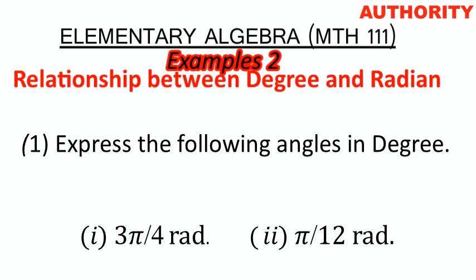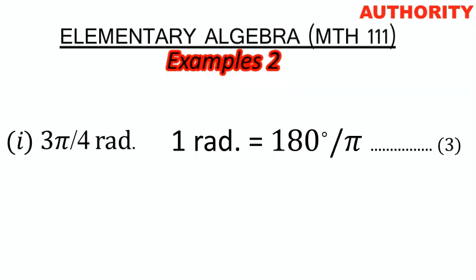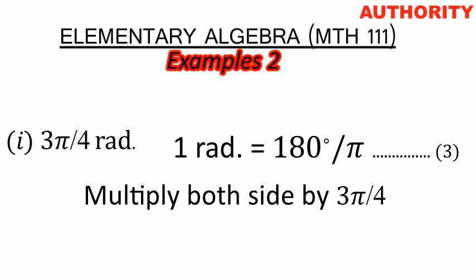The first thing we'll do is pick the right formula. The right formula to pick is the third formula, which says: 1 radian is equal to 180 over π. Once you pick this, the next step is to multiply both sides by the given angle. The angle given is 3π/4 radians.